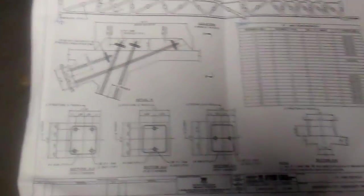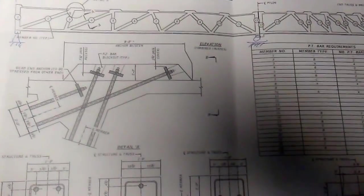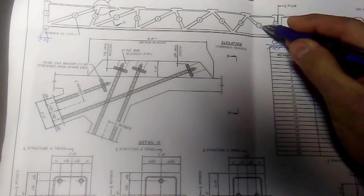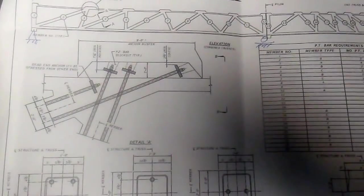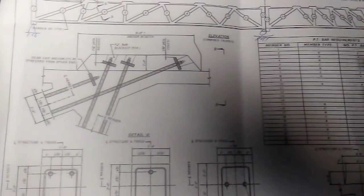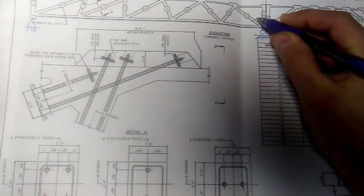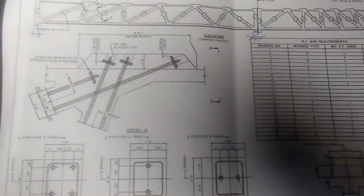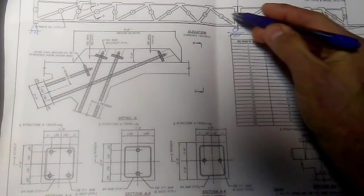Assuming that what was built is close to what is shown on these drawings, what happened is this diagonal here — number 11 — is the one that failed. That member is where it seems cracks formed. We're not exactly sure where the cracks occurred because that information has not been released, but we do know that in this general vicinity there were cracks.